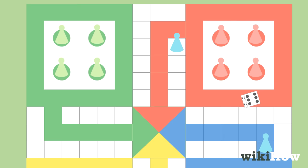If a second six is rolled, that player takes a third roll. If a third six is rolled in a row, that player may not move and the turn ends.